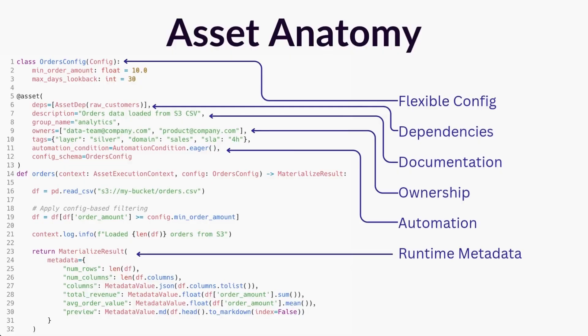When you define asset ownership, you can do that right in the asset decorator by simply defining owners, and you can do that for individuals or teams. Now when this asset has issues, there's no guessing game. The owner will get pinged, and if they're on vacation, anybody on the data engineering team can step in. And it's that simple.